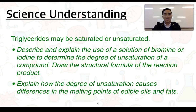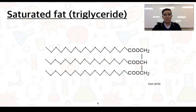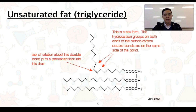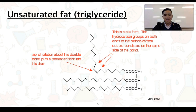Also explain how the degree of unsaturation causes differences in the melting points of edible oils and fats. Triglycerides can be classified as saturated or unsaturated. Saturated fats or triglycerides consist of only single carbon-to-carbon bonds and form very linear chains. Unsaturated fats or triglycerides consist of at least one carbon-to-carbon double bond within the chain. These double bonds introduce a kink within the chain because the hydrocarbon groups bond on the same side — this is what we call the cis form.